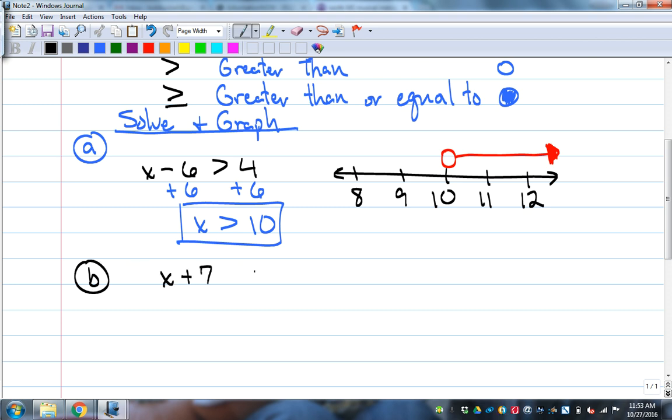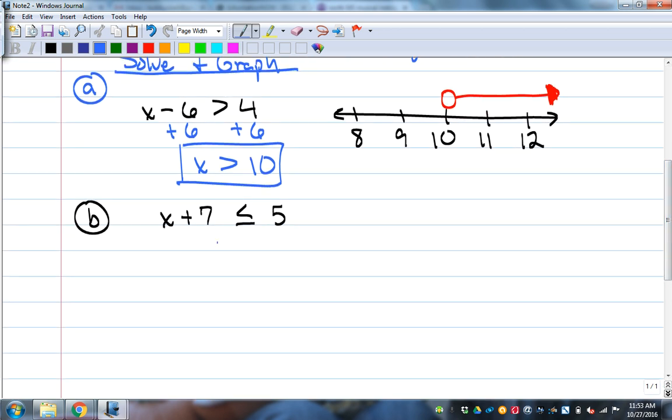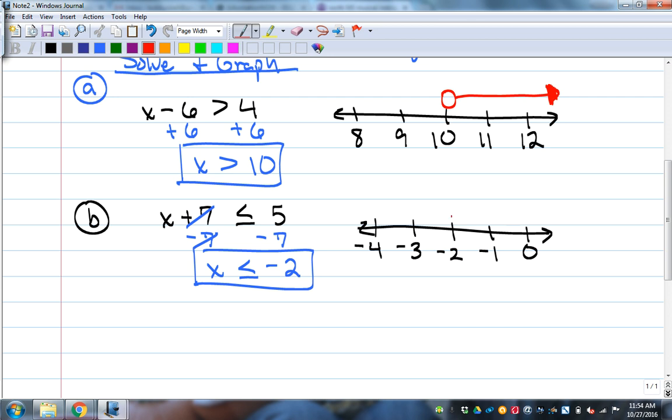Example B, we've got x plus 7 less than or equal to 5. How do I get x by itself? Subtract 7. x is less than or equal to negative 2. Draw that on a number line. I'm going to put the answer in the middle, negative 2. What goes to the right of negative 2? Negative 1 and 0. To the left would be negative 3, negative 4. Above the negative 2 is what? Closed circle, filled in, because it has an equal to mark. And it says the answers x are less than or equal to negative 2. So that's going to go which direction? Toward the negative 3 and negative 4 because they're less than negative 2.